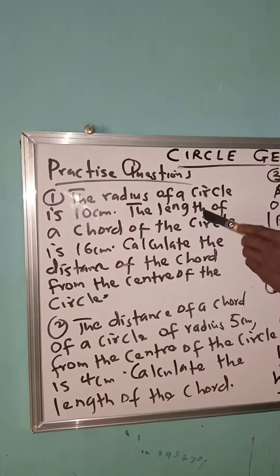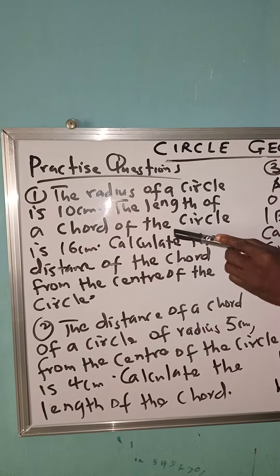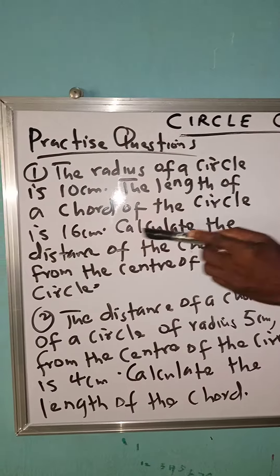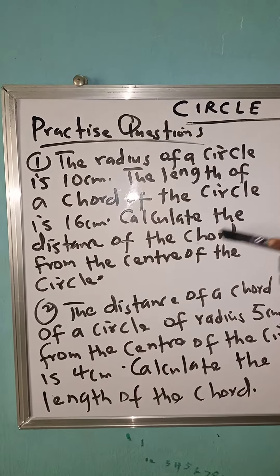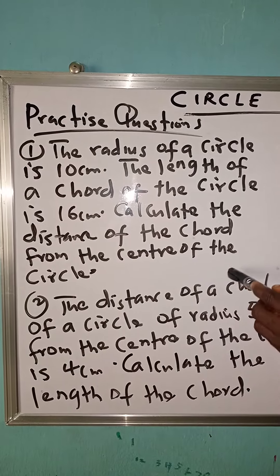Practice questions. Question 1. The radius of a circle is 10 cm. The length of a chord of the circle is 16 cm. Calculate the perpendicular distance of the chord from the center of the circle.